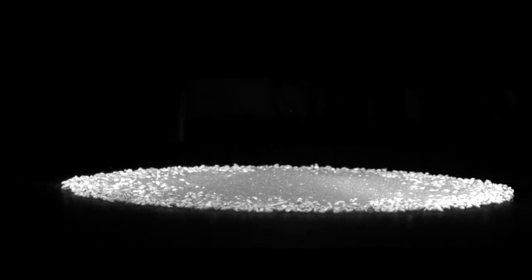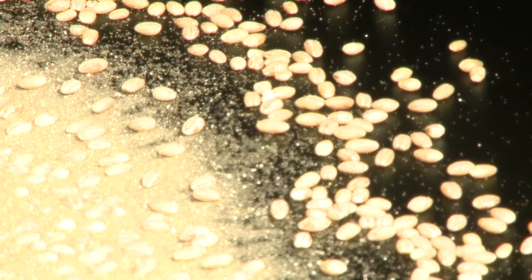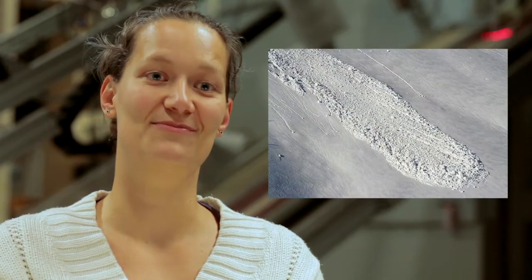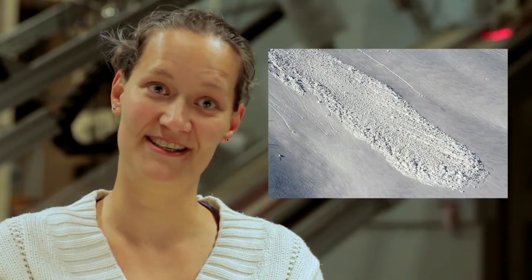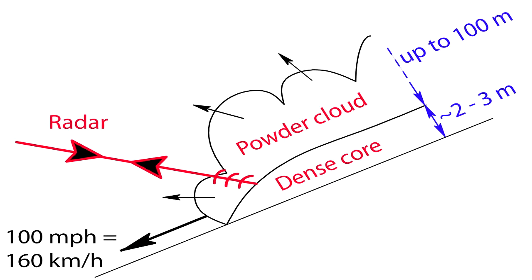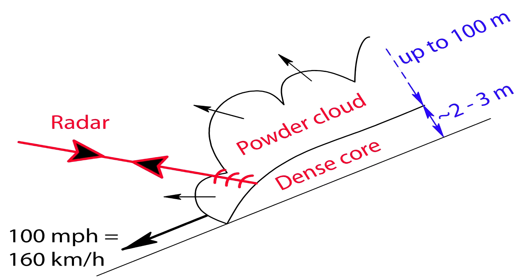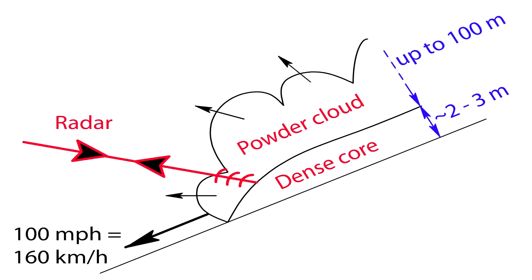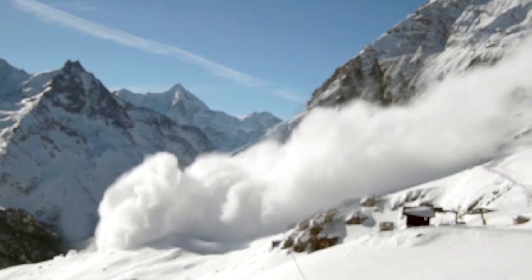Although this is a very simple experiment, it contains some quite complicated dynamics. In nature we find the segregation phenomenon as well — in snow avalanches the big particles are moving to the front of the avalanche, while the small particles are centred in the middle. Understanding that interaction is important for understanding how the flow of an avalanche coupled to its powder cloud really behaves.